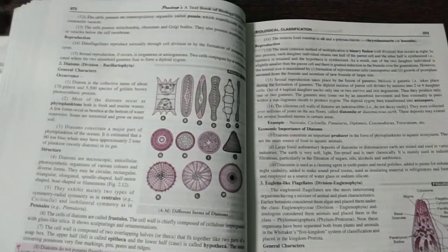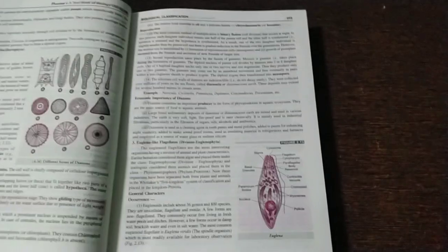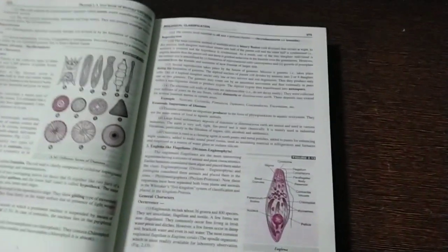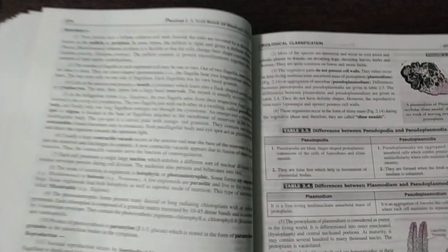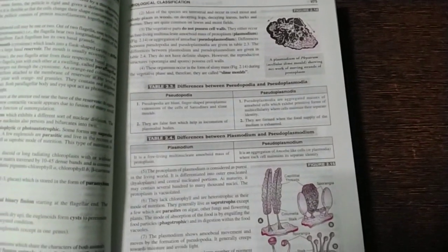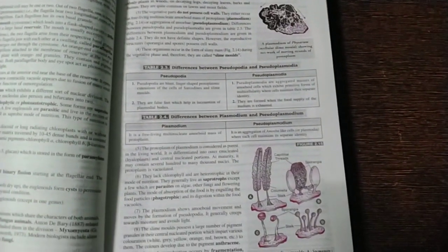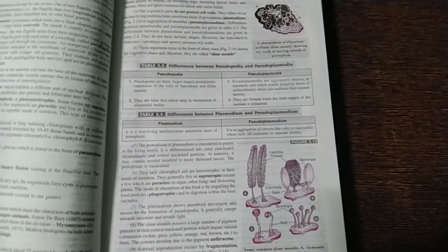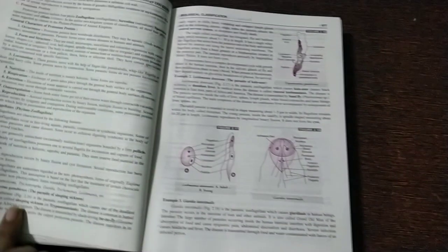See diagrams of diatoms. Euglena diagram, it is also given in NCERT. Okay, medusoid mitochondria, consumer decomposer protista, and the differences, you can see, plasmodium, pseudoplasmodium.